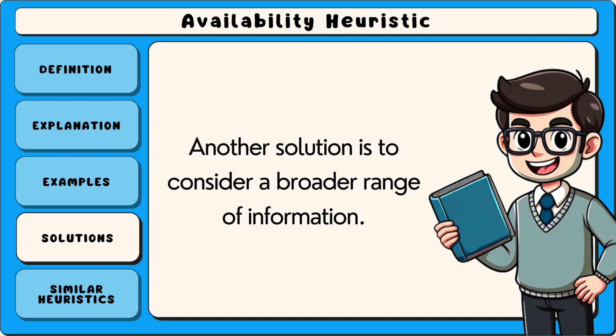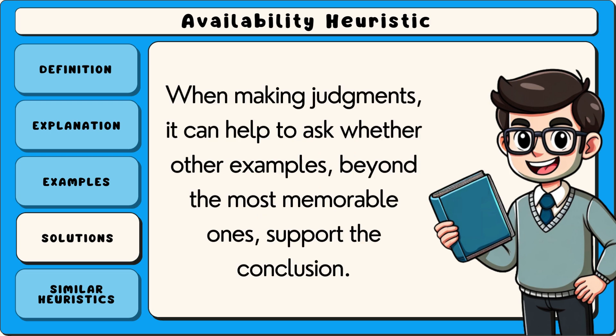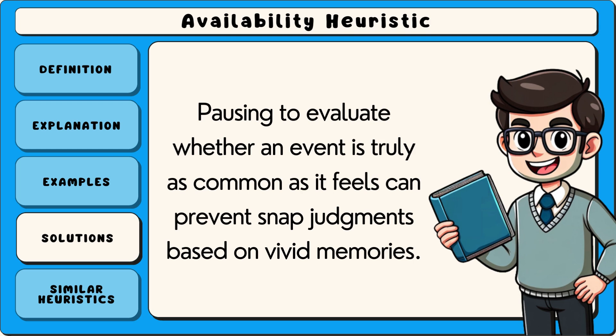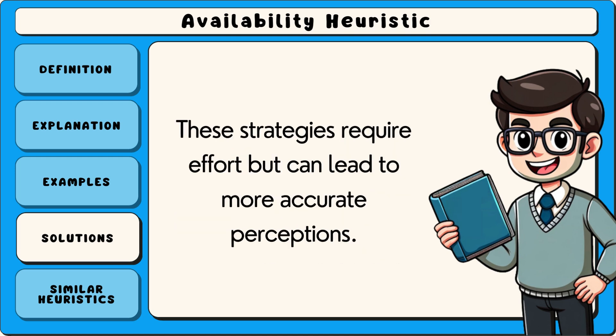Another solution is to consider a broader range of information. When making judgements, it can help to ask whether other examples, beyond the most memorable ones, support the conclusion. A third solution is to take time to reflect before making a decision. Pausing to evaluate whether an event is truly as common as it feels can prevent snap judgements based on vivid memories. These strategies require effort but can lead to more accurate perceptions.